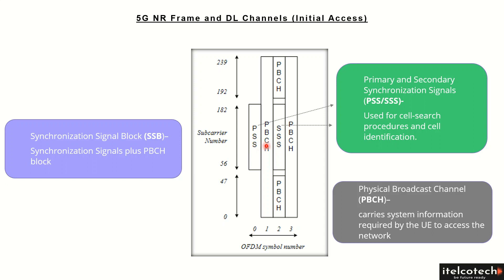The PSS and SSS are used for the cell search procedure and identification of a cell by the user. To determine which cell to latch onto, the UE first searches for the PSS and SSS. Their location is fixed, making it easy for the user to identify them, and they are continuously transmitted by the base station.